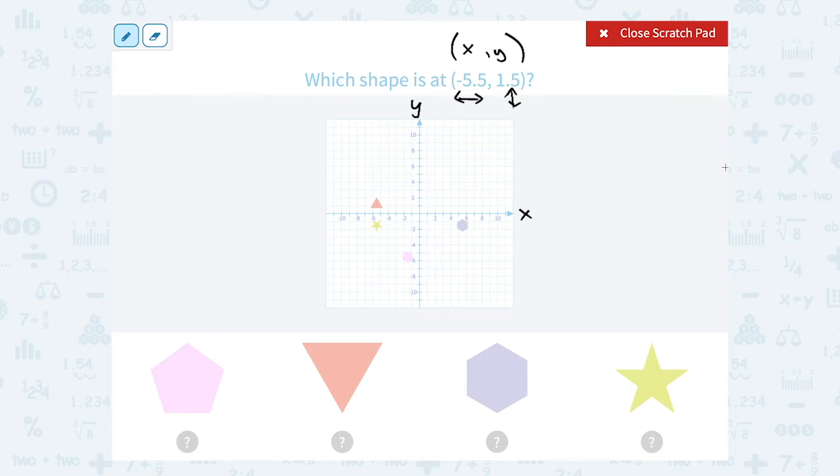So negative 5.5, 1.5 tells us to go left 5.5, and then up 1.5. So from the center, 0, 0, I'm going to go 5.5 to the left.